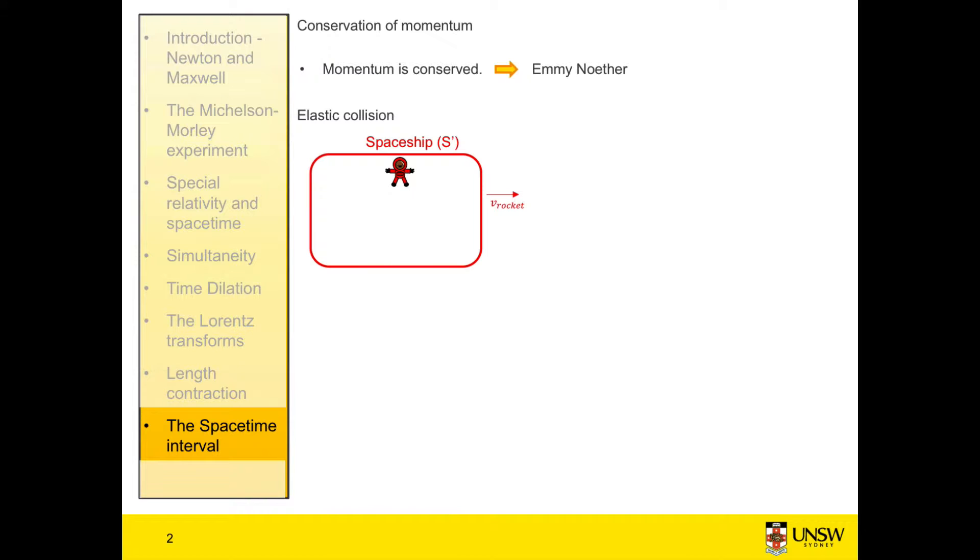So once again we have our spaceship and we have our space garage. Our spaceship is moving with a relative velocity v in the x direction. Any quantities in red or in red dash are quantities from the point of view of the astronaut in his spaceship, so from the reference frame S', and any quantities in blue are quantities from the point of view of our space mechanic, so from the reference frame S.